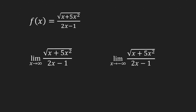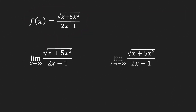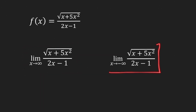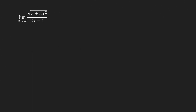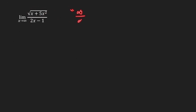Let us now find the horizontal asymptotes of this function. We want to find the limits at infinity — the limit at positive infinity and the limit at negative infinity. If we look at the form of this limit as x goes to infinity, the numerator also goes to infinity and the denominator goes to infinity. So we have the form infinity over infinity, which is an indeterminate form, so we need to do extra effort to evaluate the limit.